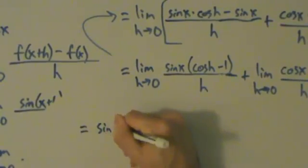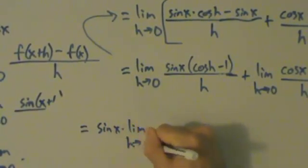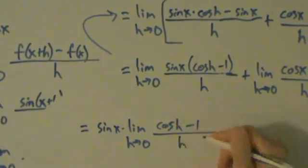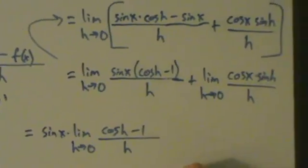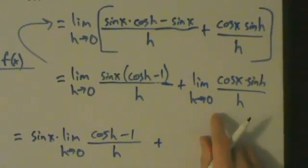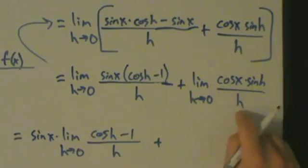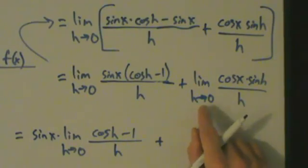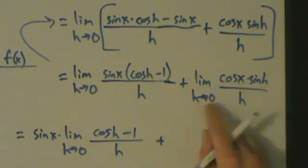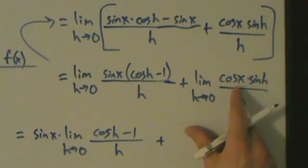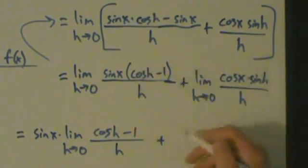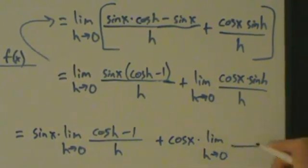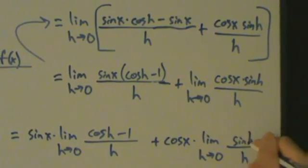So this equals sine of x times the limit as h goes to 0 of cosine h minus 1 over h, plus — doing the same thing — cosine x times the limit as h goes to 0 of sine h over h. Cosine of x is also just a constant as far as this limit is concerned, so we pull it out.